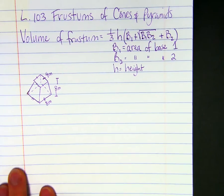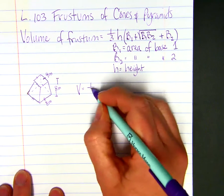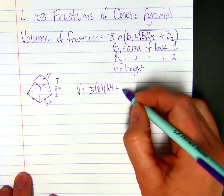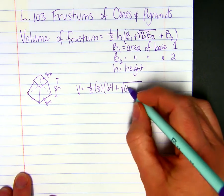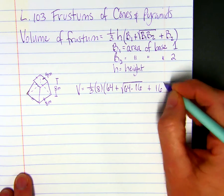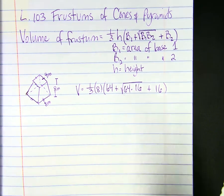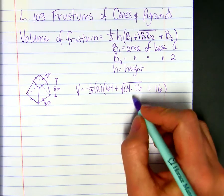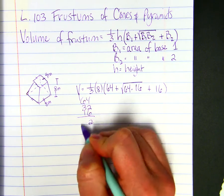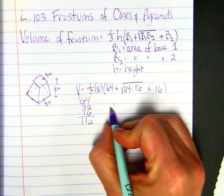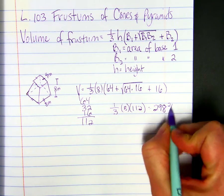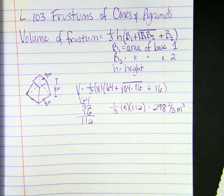To find the volume, we do one-third times 8. The area of the base is 8 squared, or 64, plus the square root of 64 times 16, plus 16. When you take the square root of the product, you can find the product of the square roots. So this would be 8 times 4, or 32. So we do 64 plus 32 plus 16, which is 112. So one-third times 8 times 112, we get 298 and two-thirds meters cubed.